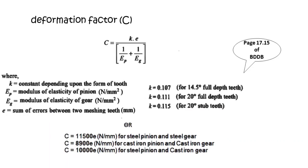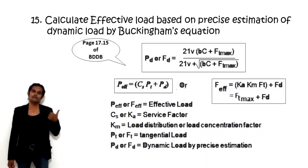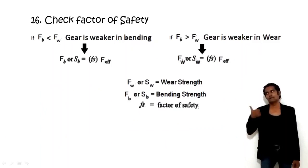Step 15 (Deformation factor): Find C = K × E / (1/EP + 1/EG) if EP and EG values are given. If not, use C = 11500E, or 8900E, or 10000E depending on material — steel pinion/steel gear, cast iron pinion/cast iron gear, etc. E here is the total error calculated previously. Then calculate dynamic load using the Buckingham equation FD. Step 16: Check factor of safety — if gear is weaker in bending, beam strength = FOS × F-effective; if weaker in wear, wear strength = FOS × F-effective.